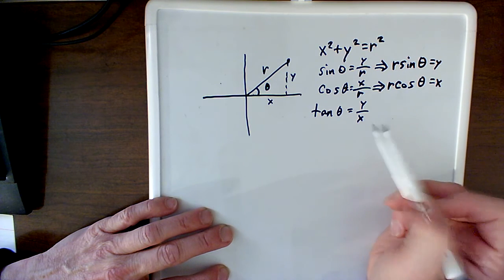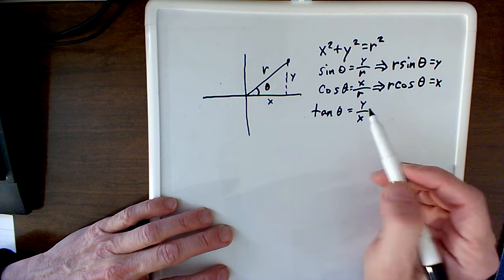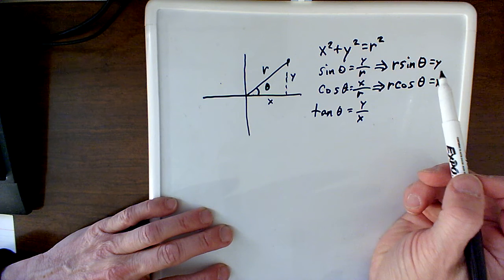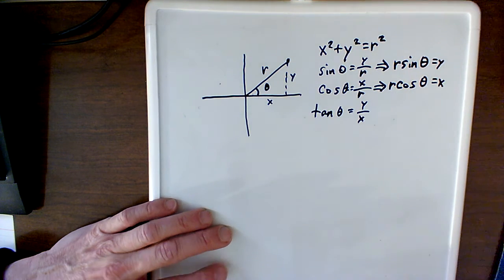And then I have tan theta is y over x. So these are the kind of things we're talking about. We can easily convert from what's called polar form to rectangular form.